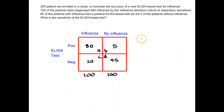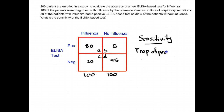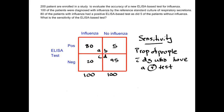The best thing to do is to understand conceptually what sensitivity means rather than memorize a formula. Sensitivity is the proportion of people with disease who have a positive test. If you understand this concept, you'll be able to figure out how to make this calculation much better than memorizing formulas.